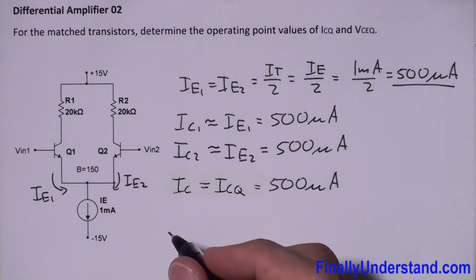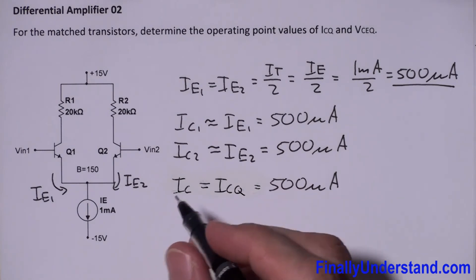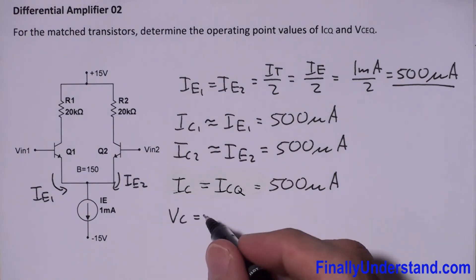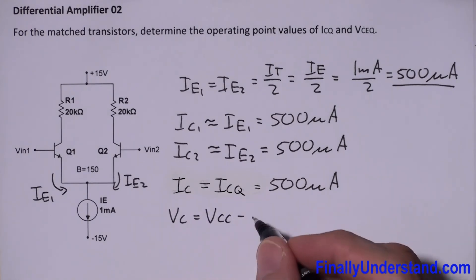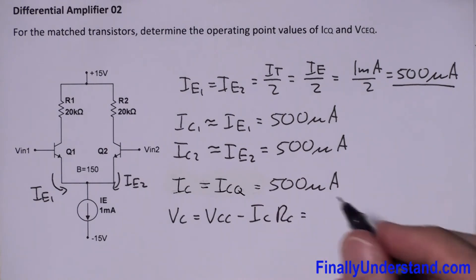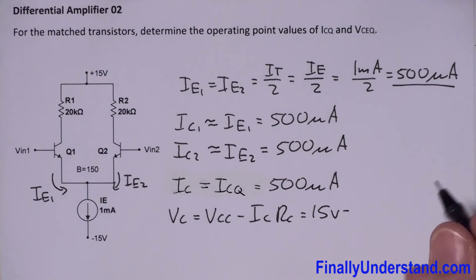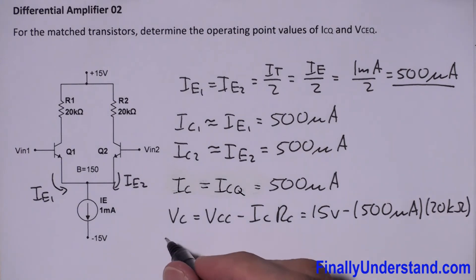In order to find VCE, we're supposed to find VC first. VC is equal to VCC minus IC times RC, where VCC is equal to 15 volts. VC equals 15 volts minus IC, 500 microamps, times RC, 20 kilo-ohms.